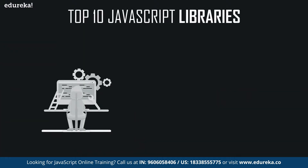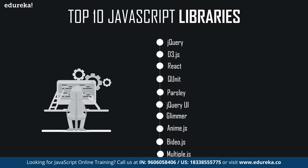Let's have a look at the list of some of the most popular JavaScript libraries that help you perform complex tasks easily. We have jQuery, D3.js, React, QUnit, Parsley, jQuery UI, Glimmer, Anime.js, Video.js, and finally Multiple.js. These are some of the most popular and most commonly used libraries in JavaScript for various applications.